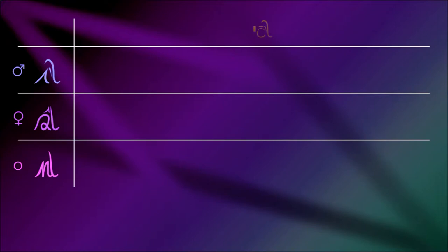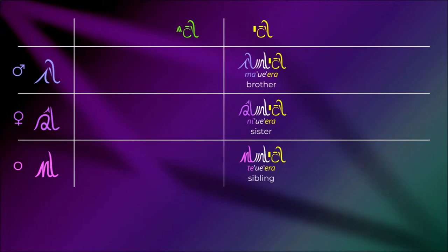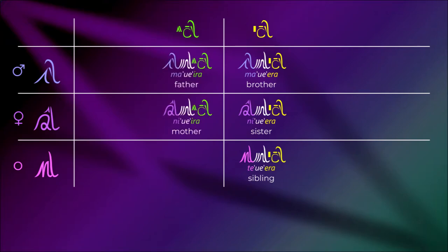We'll start with the same generation, era. Ma-ue-era is the closest male family member in the same generation as yourself — a brother. Ni-ue-era is the female equivalent — your sister. Te-ue-era is a gender-unspecified word — a sibling. Since all words in Eilis can be either singular or plural, these three words can also mean brothers, sisters, or siblings in general. Then for the generation older than yourself: ma-ue-ira is your father, ni-ue-ira is your mother, and te-ue-ira can be used for either parent, or the plural parents.